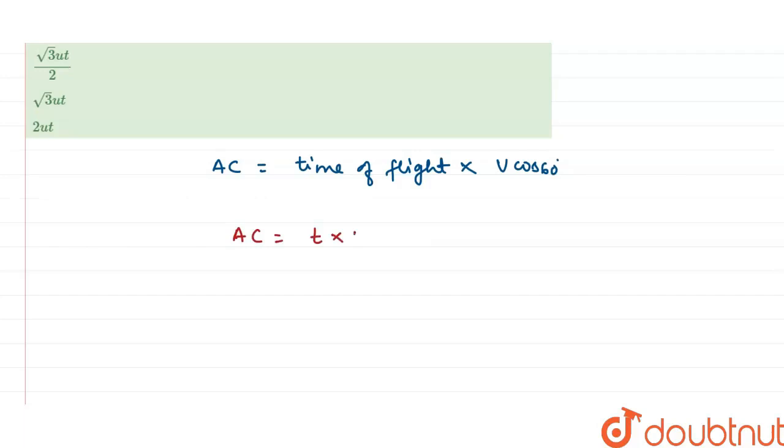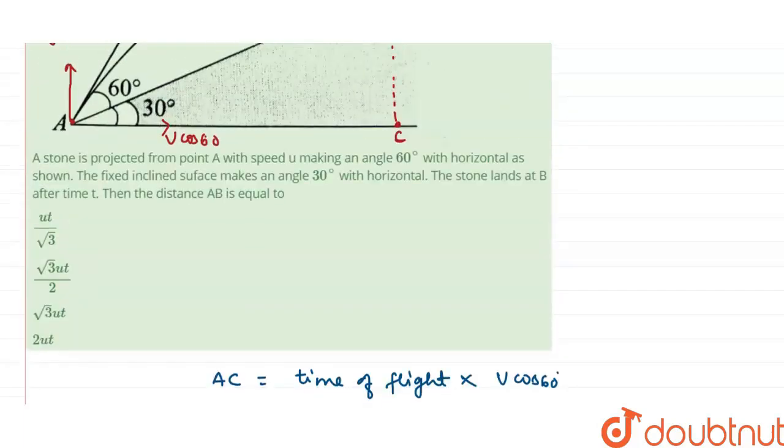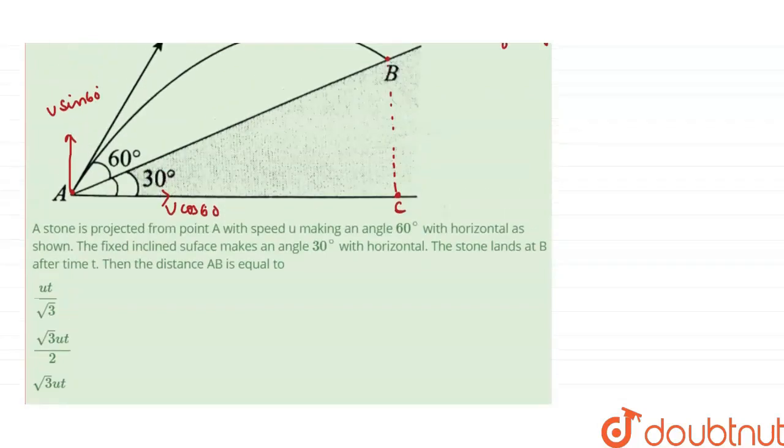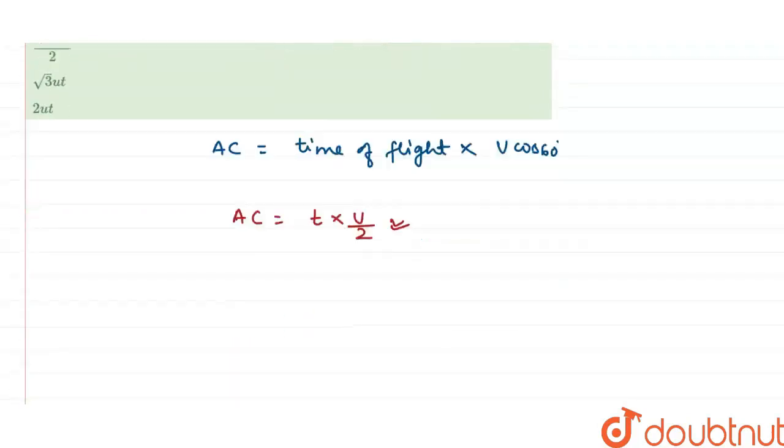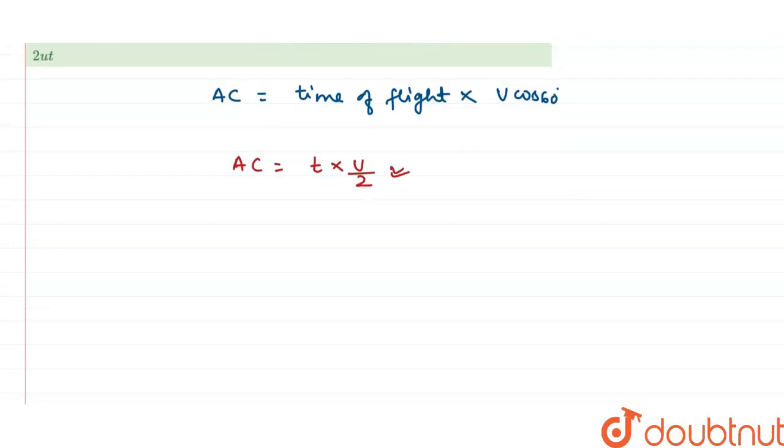Now the value of cos 60 is half, so the distance AC is t into u by 2. This is the distance AC. Now as you can see, this is now a triangle in which angle is 30 degrees and we have to find out this distance AB.